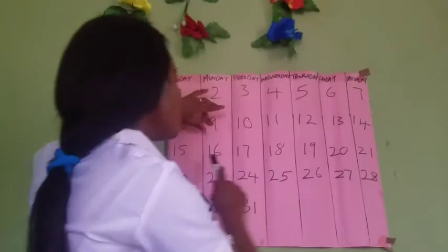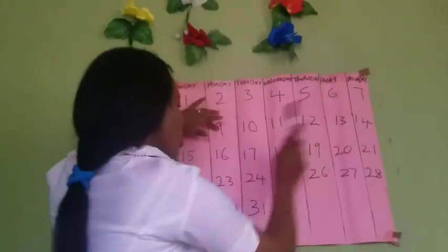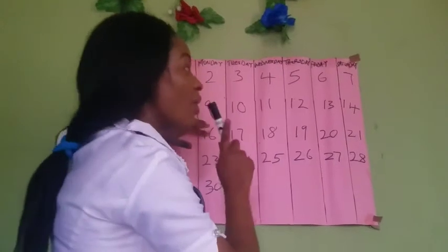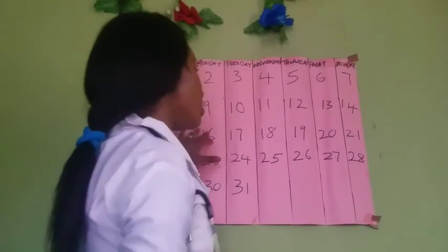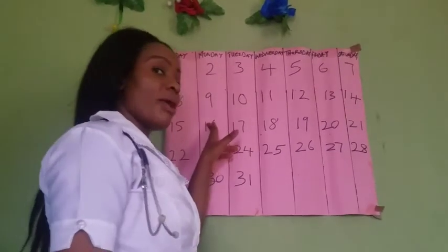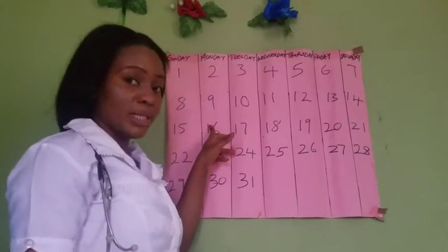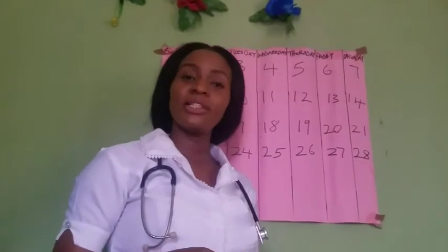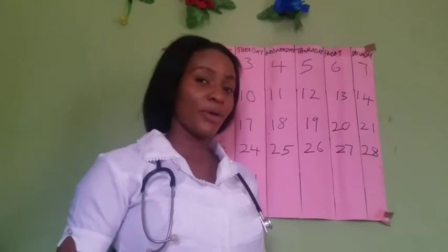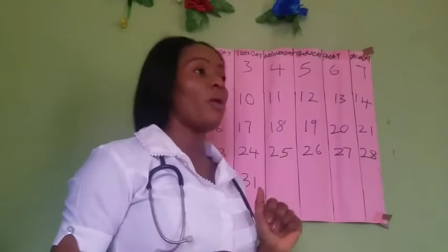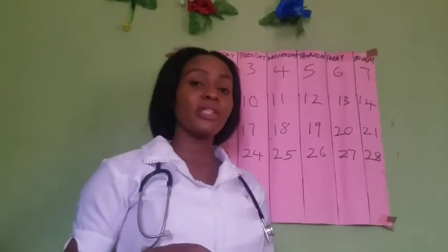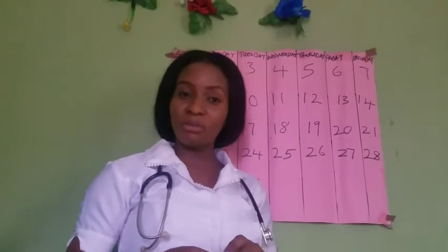Two days after ovulation — days 15 and 16 — are still within her fertile period, but the probability of getting pregnant has reduced. For a woman with an irregular menstrual cycle, it is recommended that you chart your menstrual cycle for a period of six months and take the lowest cycle length, which will help you know when your ovulation is going to be.